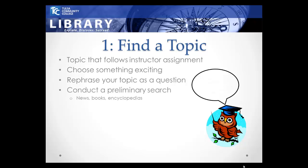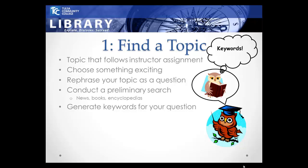Be sure your topic allows you to find a realistic amount of information. Conducting preliminary research will help you determine whether sources are available to meet your needs. Begin brainstorming by scanning the news, books, encyclopedias, and other reference materials. If you find too much information, you may need to narrow your topic; if you find too little, you may need to broaden it. Once your topic is stated as a question, identify the main keywords for your search and brainstorm synonyms and related terms. For year-round schooling, examples include year-round education, educational reform, and K-12 school alternatives.